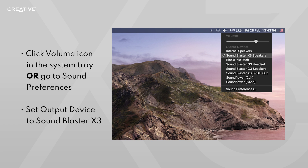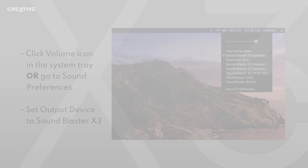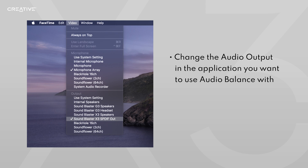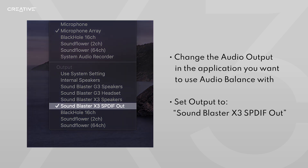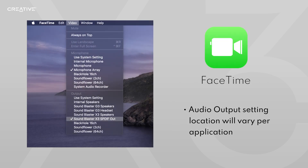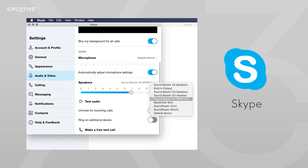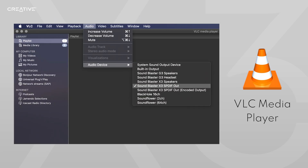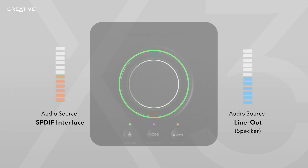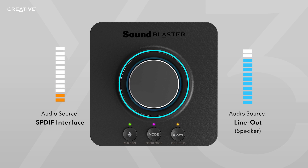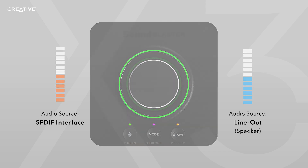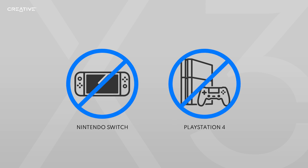To use Audio Balance on Mac OS, click the Volume icon in the System Tray and set your output device to Sound Blaster X3. Then, you will have to change the output within the audio settings of the application you want to use Audio Balance with. Once you have located the Audio Settings menu in your application, set the default output to Sound Blaster X3 SPDIF Out. The location of the audio settings may vary depending on the application. Here are some examples. You can then use the knob on the Sound Blaster X3 to balance the speaker's output and the SPDIF interface's volume. If you ever want to reset the balance, simply press the volume control knob once. Please note, Audio Balance on the Sound Blaster X3 does not work with the Nintendo Switch or PlayStation 4.